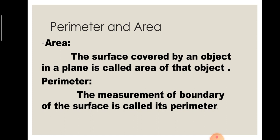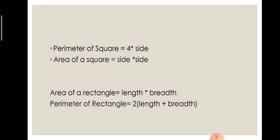And perimeter: the measurement of boundary of the surface is called its perimeter. Jitney bhe measurement hote hai boundary ki, us surface ki boundary ki, us ko hum kya khette hai perimeter. Now we discuss about formulas of perimeter and area.